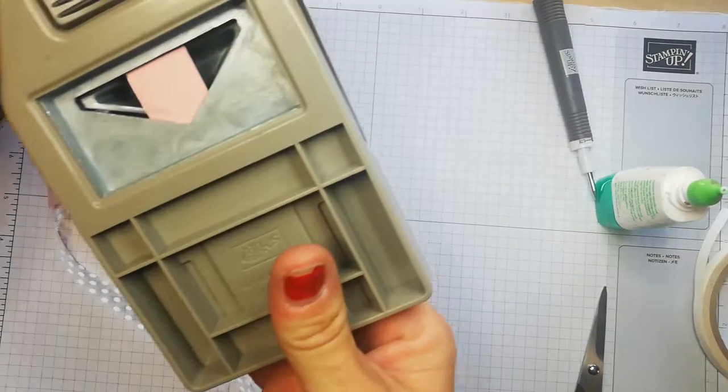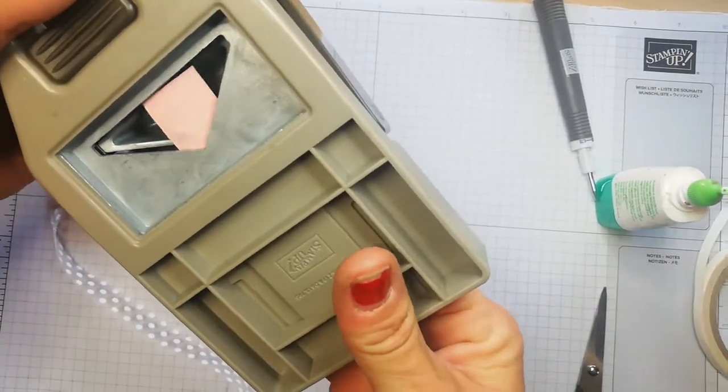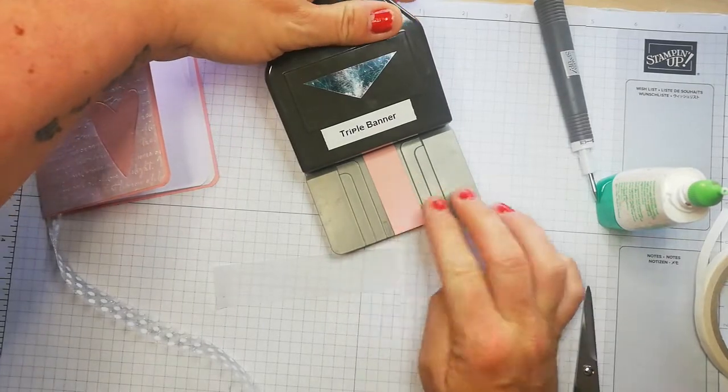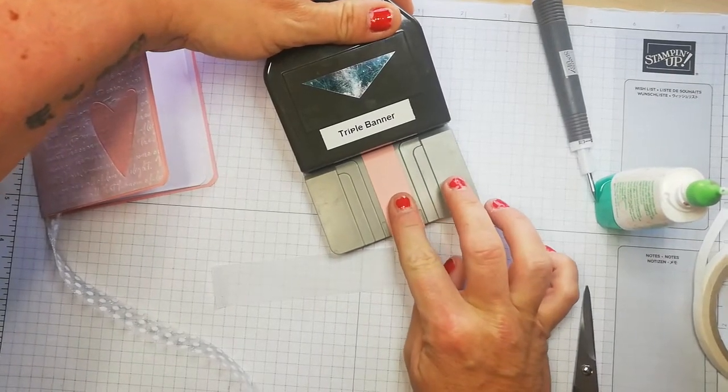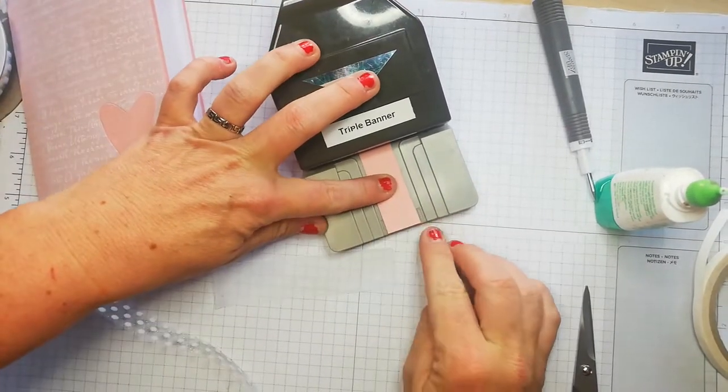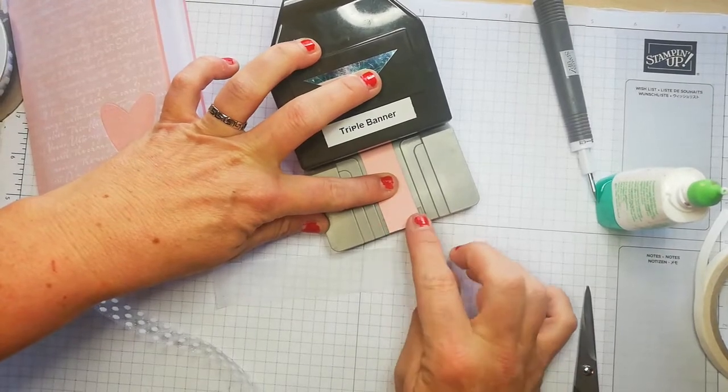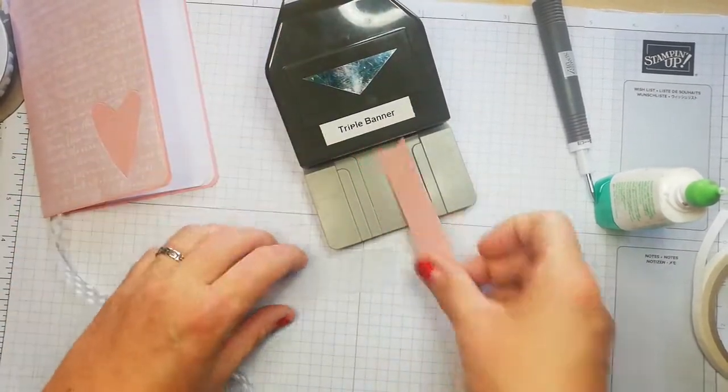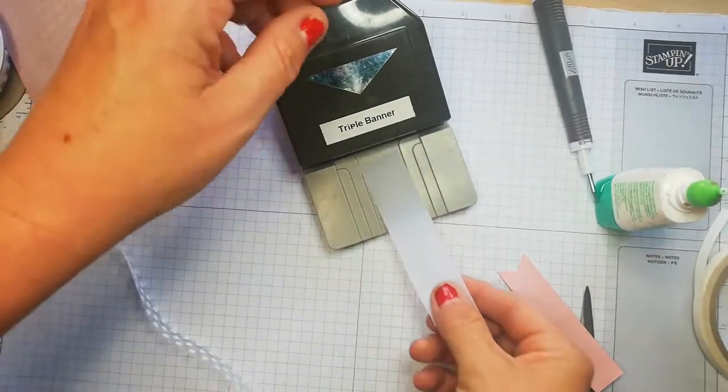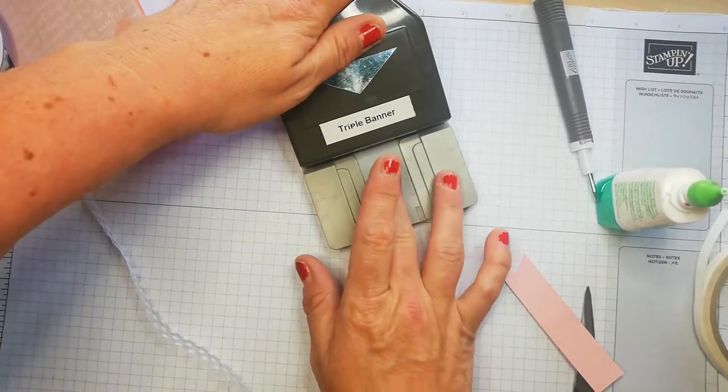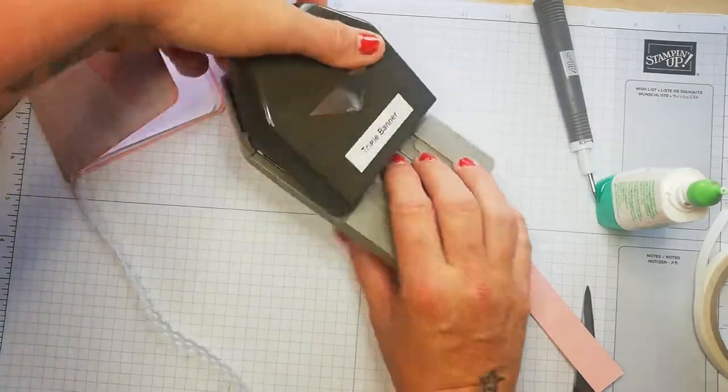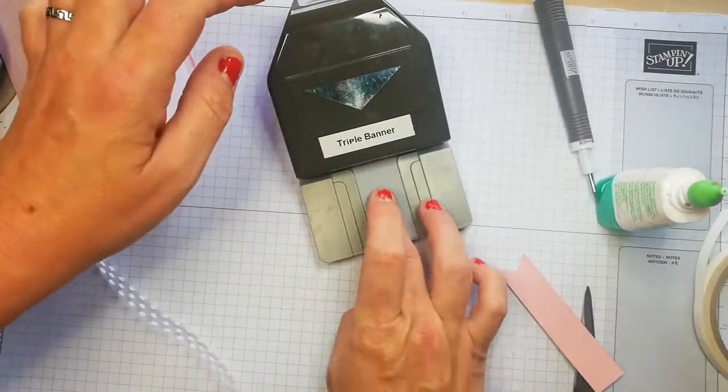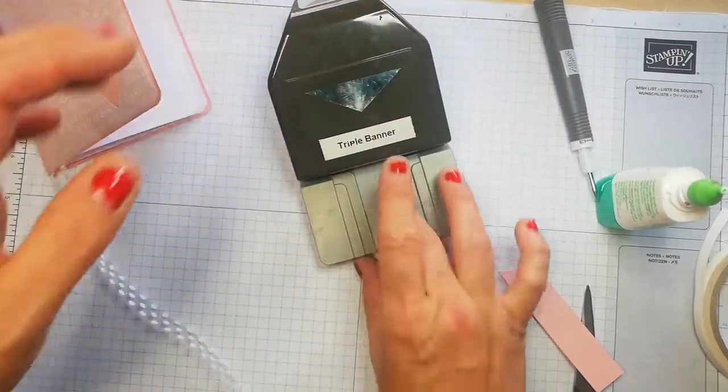I need to make sure that it's going in the middle. These little markers here can help you get it centered, and there should be enough room for me to actually stamp my sentiments.